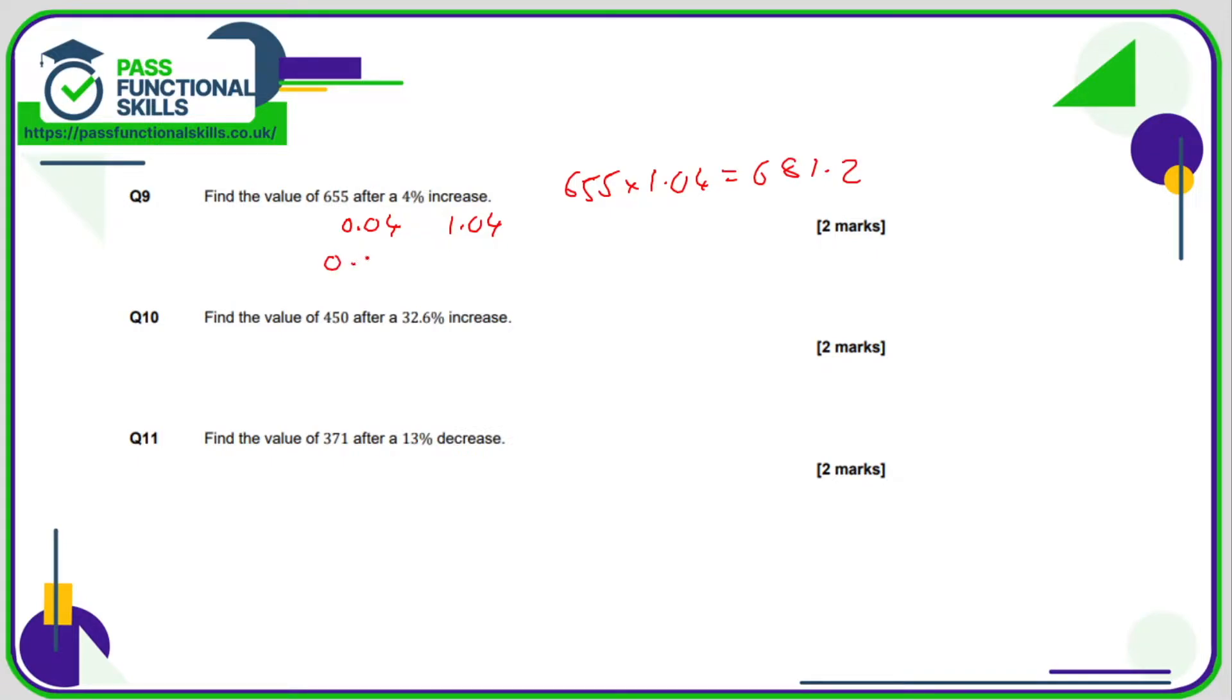Alternatively, you can work out 4% of 655, and then whatever this answer is, add it on to 655, but you'll still get the answer 681.2.